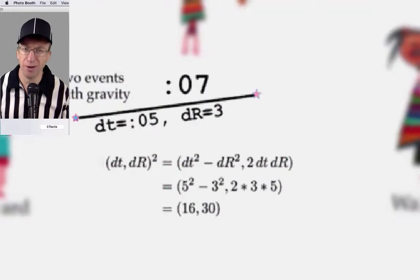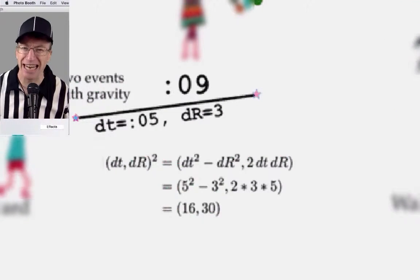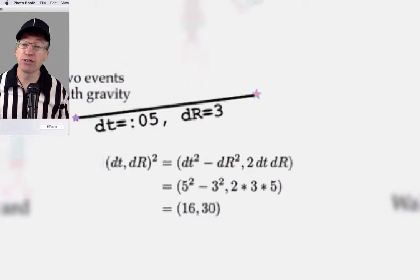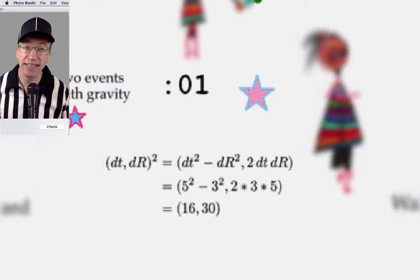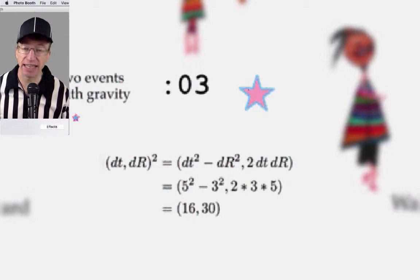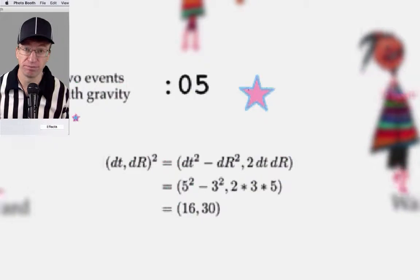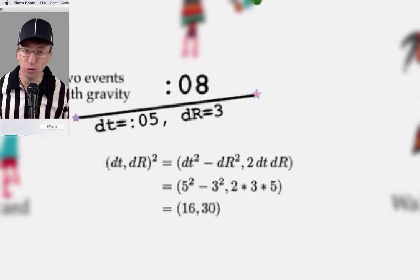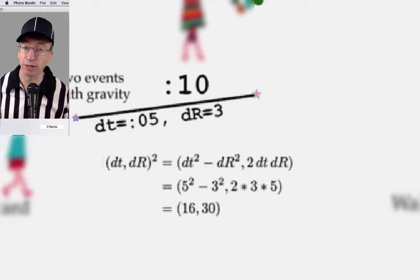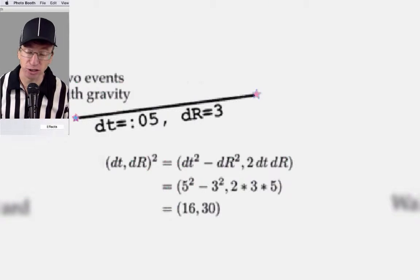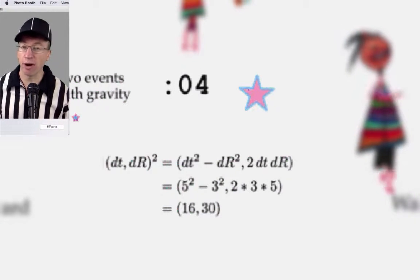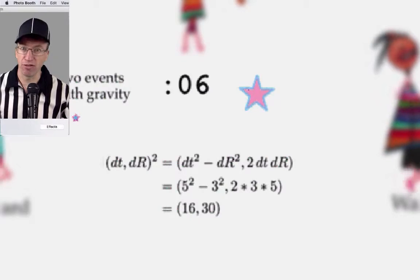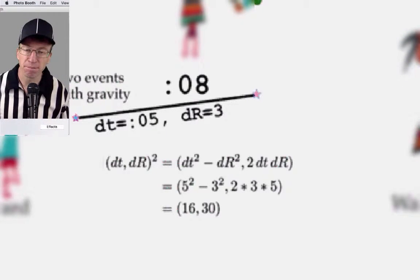What does one do with measurements anyway? I do something that's both simple and unusual — I square the difference between the events in space-time. That's actually not a legal move using the standard accounting system of physics, which is called a tensor. What I use is a type of math called a quaternion, where squaring of events in space-time is perfectly okay.